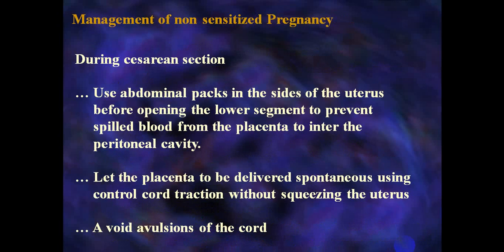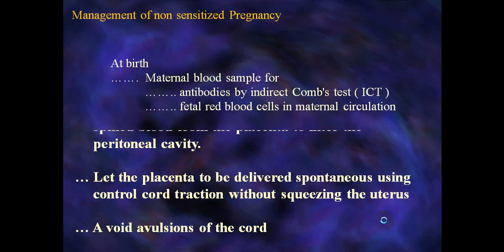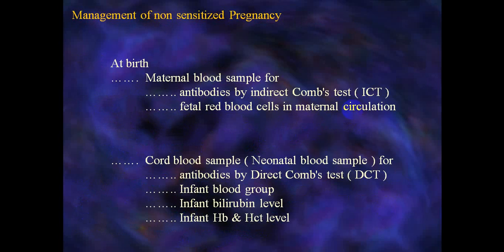During cesarean section: use abdominal packs at the sides of the uterus before opening the lower segment to prevent blood from spilling into the peritoneal cavity; let the placenta deliver spontaneously using controlled cord traction without squeezing the uterus; avoid cord avulsion. At birth: take maternal blood sample for antibodies by indirect Coombs test, detect fetal RBCs in maternal circulation by Kleihauer-Betke test, and take cord blood sampling from the neonate for antibodies by direct Coombs test, infant blood group, infant bilirubin level, hemoglobin, and serum test.